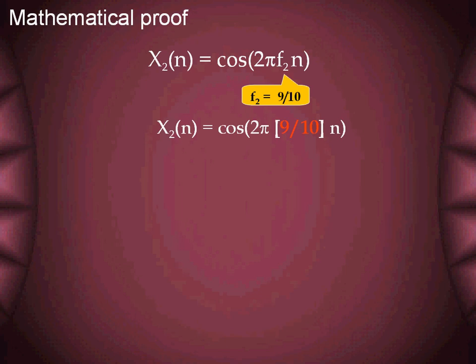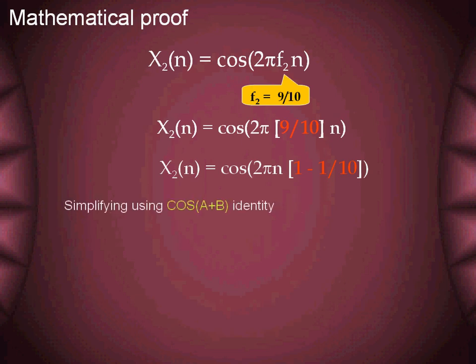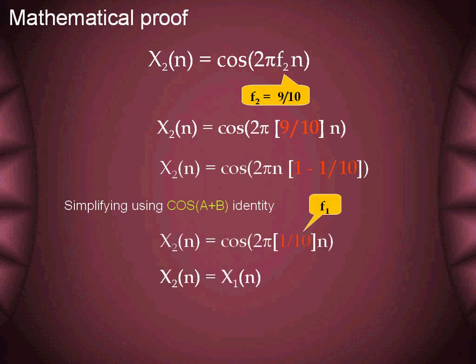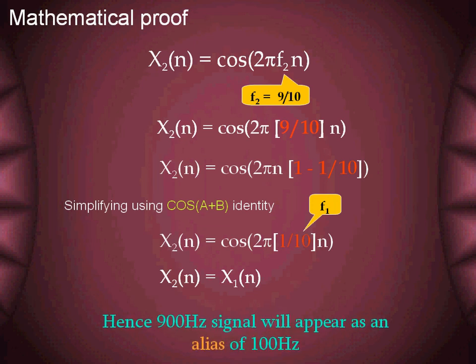Before we proceed further and understand more about aliasing, let us mathematically prove the similarity between the two signals. The signal x2 with digital frequency 0.9 can be further expressed and simplified using the cos(a + b) identity. As seen, the equation reduces to the equation of x1. Hence, the reconstructed 900 Hz signal will appear as an alias of the 100 Hz signal.